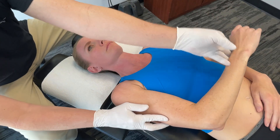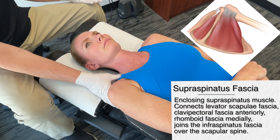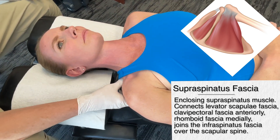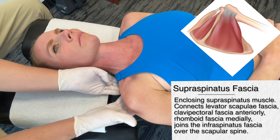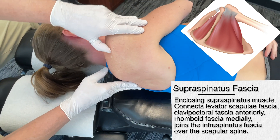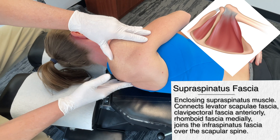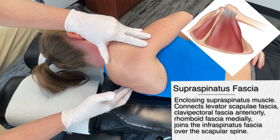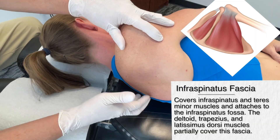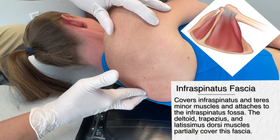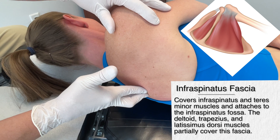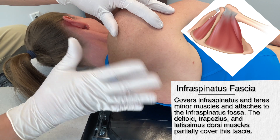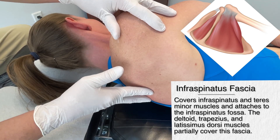Just like the supraspinatus fascia — it actually connects underneath the shoulder blade. We also have the scapular fascia that connects up into the neck. The infraspinatus fascia is a very dense fascia and it connects to the infraspinatus muscle and the teres minor muscle — two of the rotator cuff muscles.